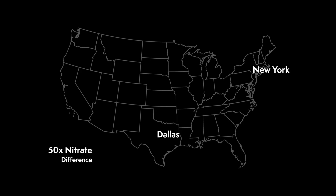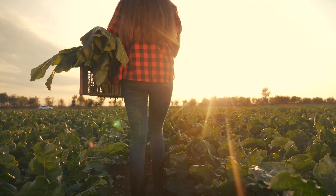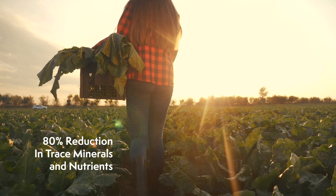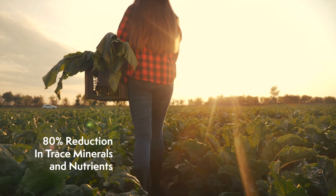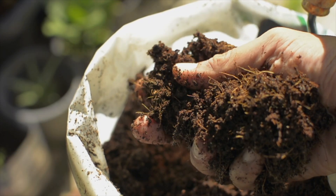We found as much as a 50-times difference in the nitrate content of celery in Dallas versus New York. We also tested conventional versus organically grown produce, and organically grown typically has about 10 times less nitrate than conventionally grown. This isn't a surprise — the food we grow and eat in America over the past 70 years, since the 1940s, has seen an 80% reduction in trace minerals and nutrients. The pressures of feeding a growing population have come at the expense of nutrient density, so we're missing nutrients like selenium and chromium that need to be supplemented.